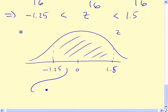Well that area there is really going to be equal to normsdist of 1.5. That value there will be everything to the left of 1.5.